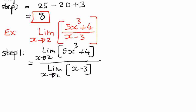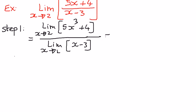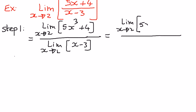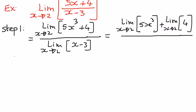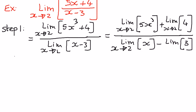So now we can break it down into a couple more steps. We can write the numerator as the limit of 5x³ as x approaches 2, plus the limit of the constant number 4 as x approaches 2. We broke down the numerator part into individual limits. Divided by the limit of the first function x as x approaches 2, minus the limit of the constant number 3 as x approaches 2.